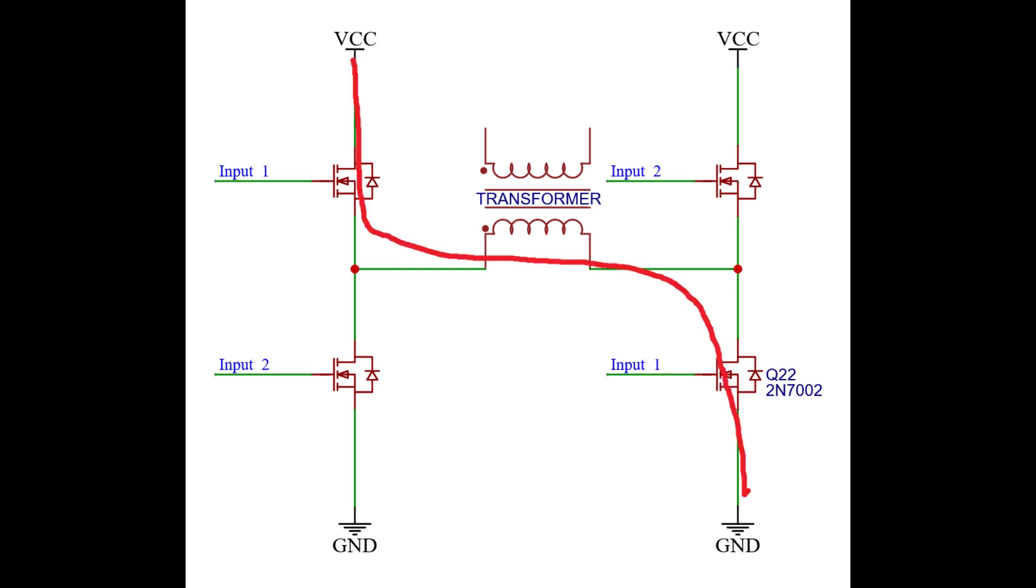If inputs 1 are both active, then current goes from left to right. And if inputs 2 are both active, the flow goes from right to left.